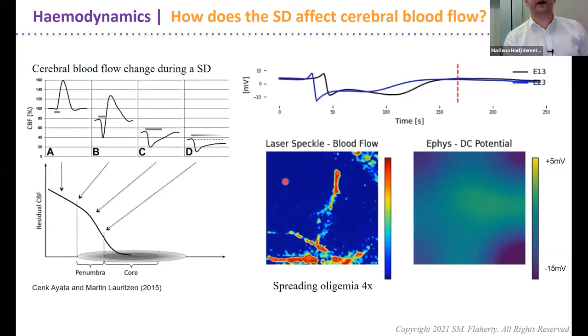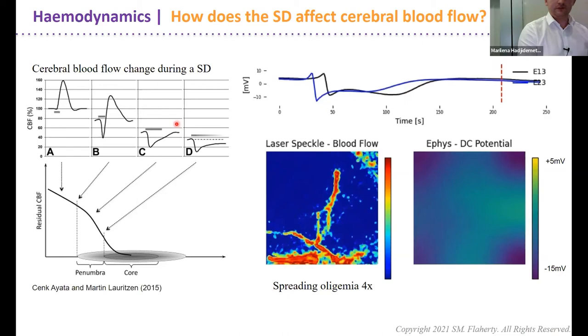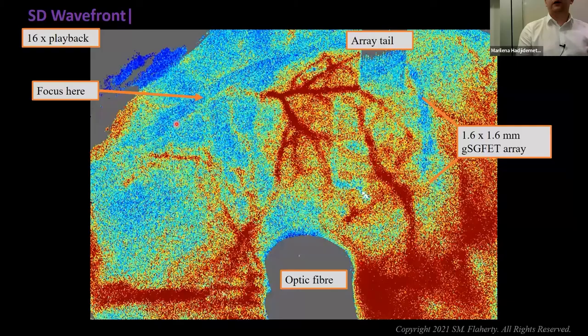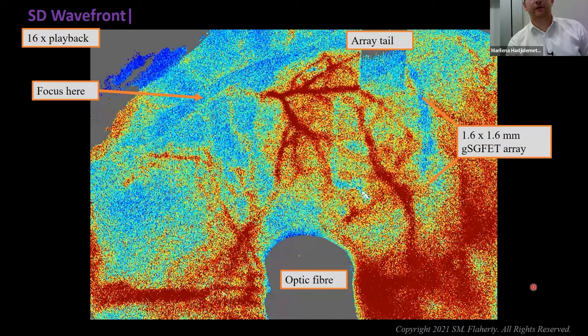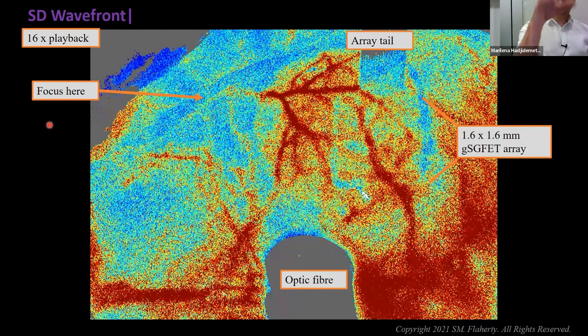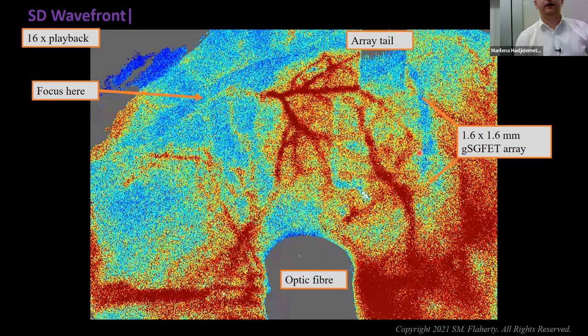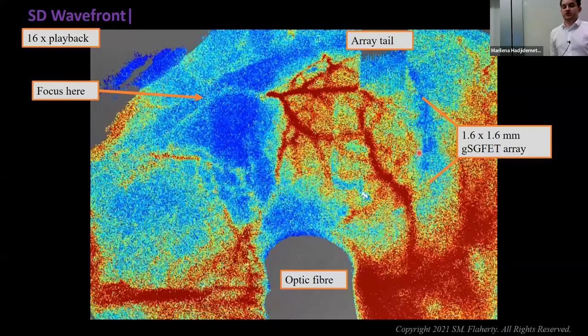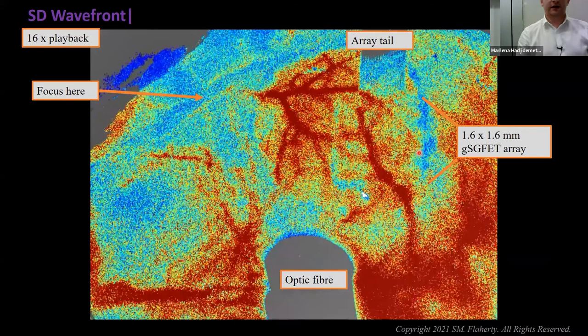From a larger field of view, the major vessels run around the midline. The array is completely invisible here. I'll play a six-second video — pay attention because it passes quickly. You'll see a dark blue shadow depicting reduction in blood flow spreading from the irradiation site downward, going underneath the array, followed by hyperemia with an increased level of blood flow. This is spreading depolarization in real time — this is how it looks as we map its spread across the cortex.